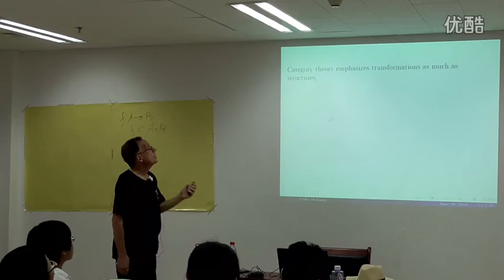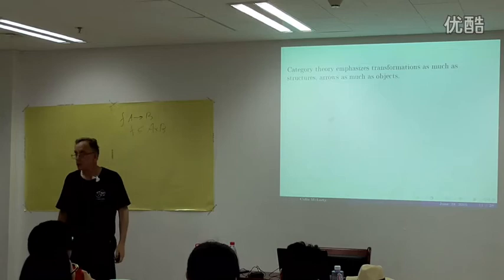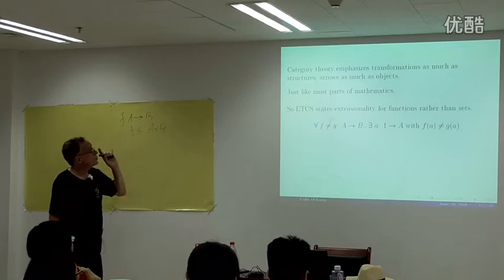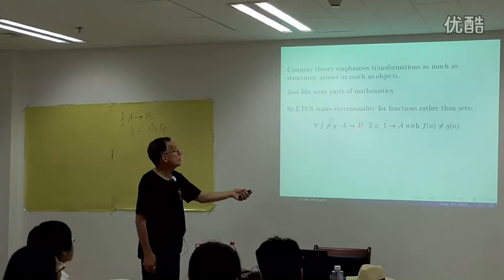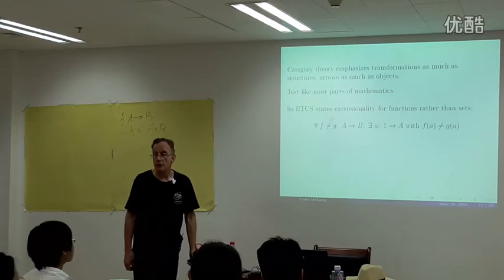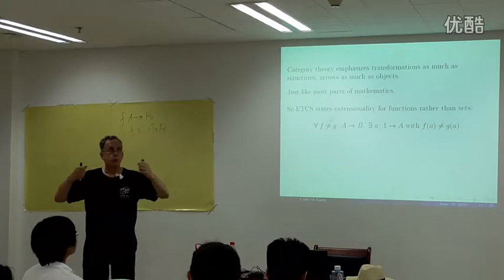Category theory emphasizes transformations as much as structures — arrows as much as objects, just like most parts of mathematics. We state extensionality for functions rather than sets: if you have two different functions between the same sets, then there's some element of the domain where the value is different.